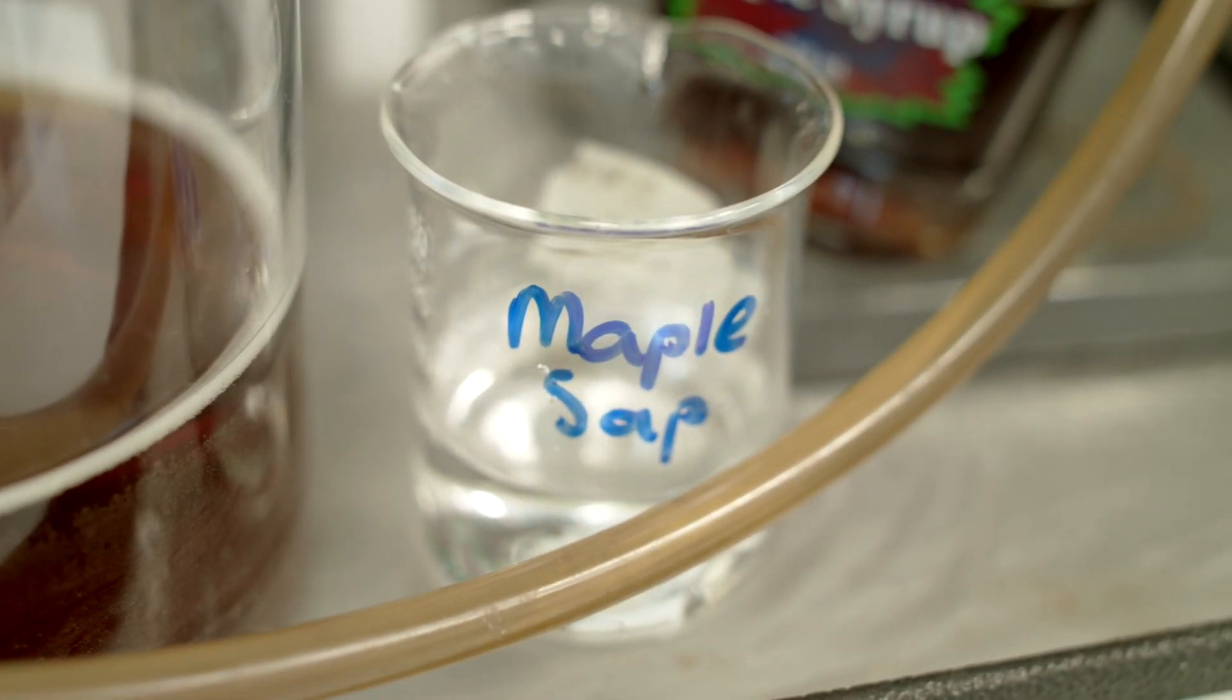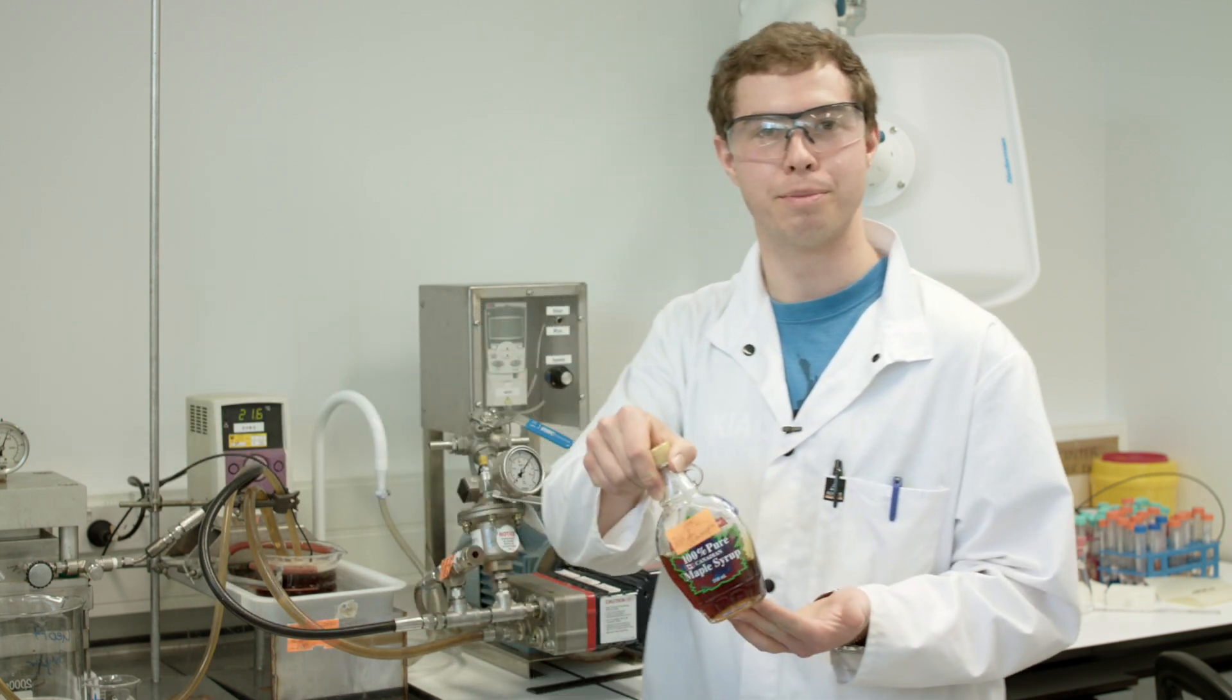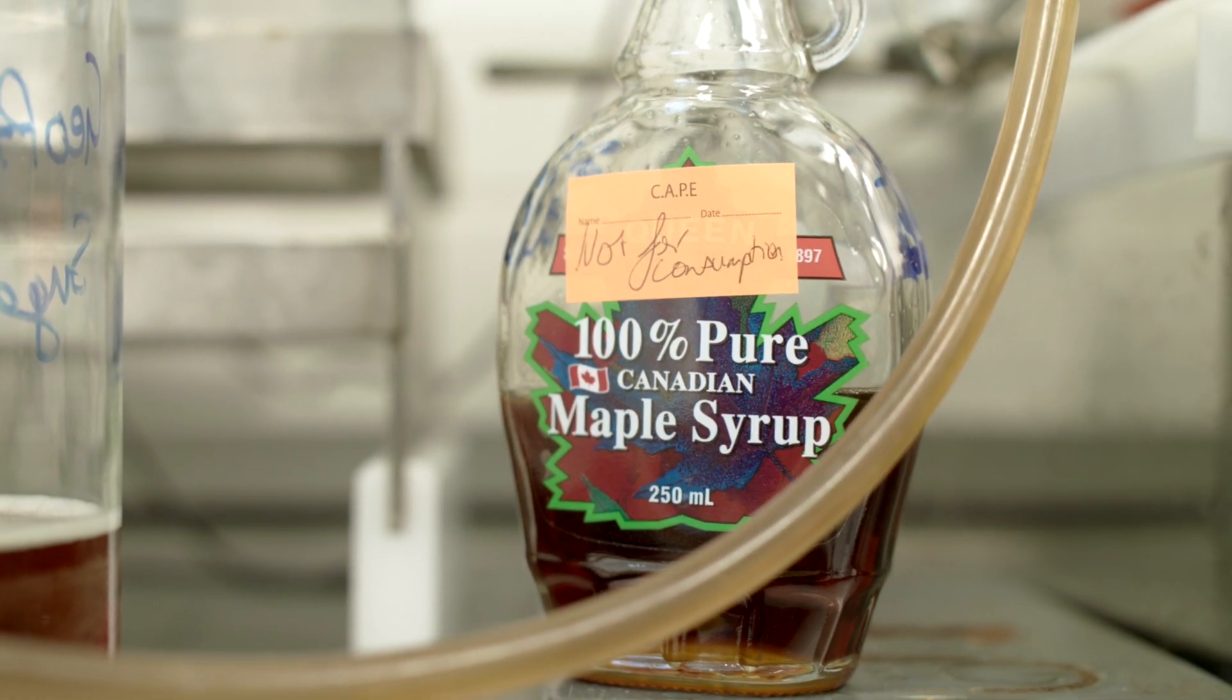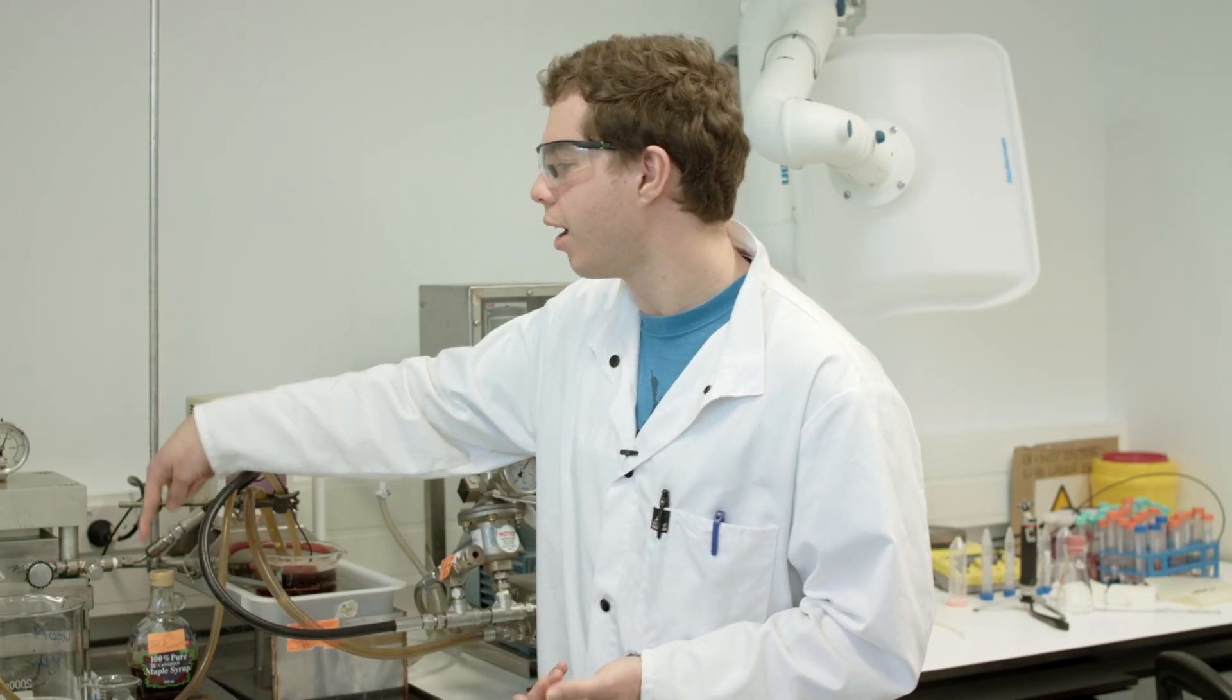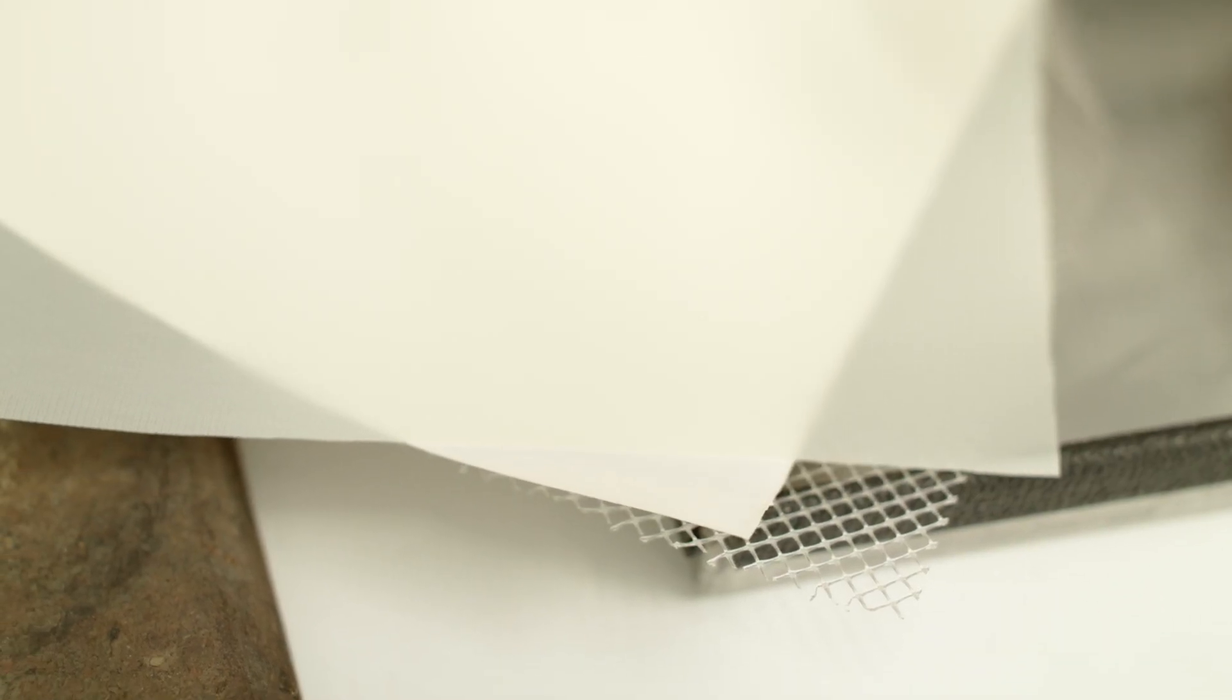We're trying to concentrate maple sap, which is in effect this stuff, to maple syrup, which you would buy at the supermarket. And the reason we want to do that is we're going from 2% sugar to 66% sugar. We do that by use of a membrane. This membrane here will allow the water to pass through, but not the sugar.